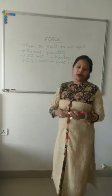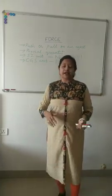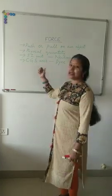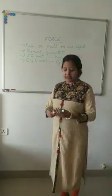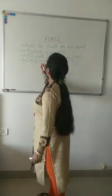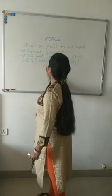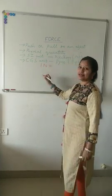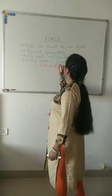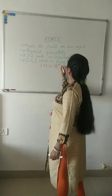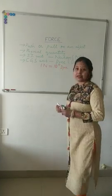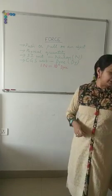So now you know that force is a measurable quantity, its SI unit is newton and its CGS unit is dyne. There is one important relation between newton and dyne: one newton equals ten to the power 5 dynes. This is an important relation — please note it.